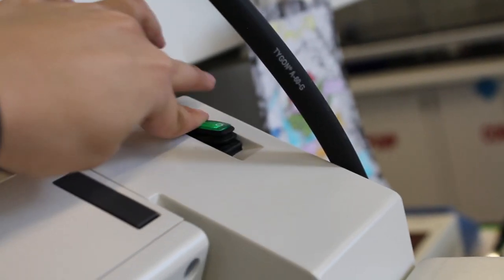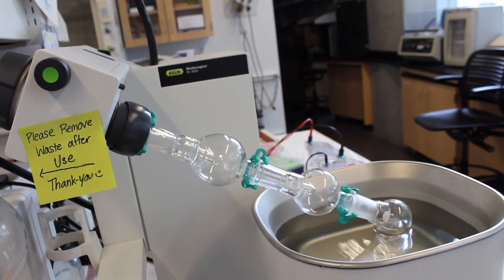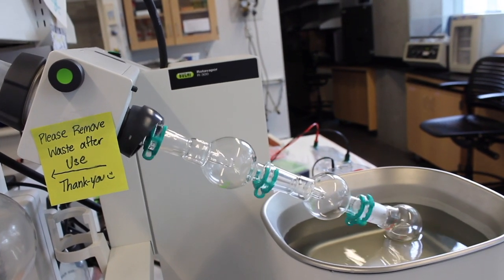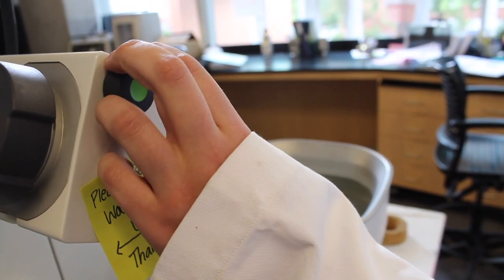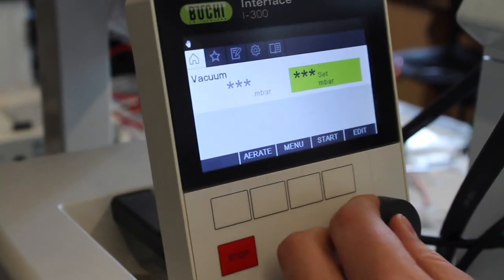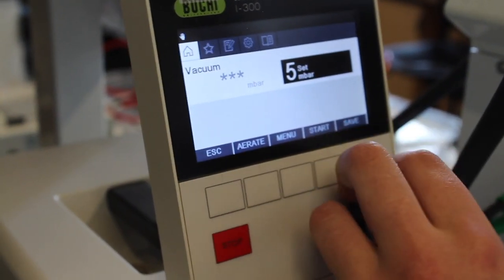Make sure that the bump trap with the attached round bottom flask is rotating. You can adjust the rotation to the desired RPM using the control panel knobs. You can also use these knobs to change the specific pressure of the solvent you're trying to evaporate.